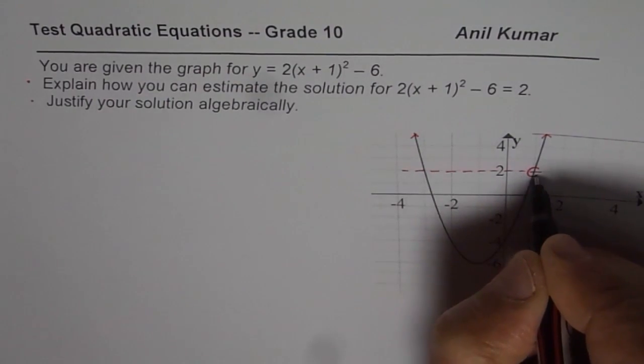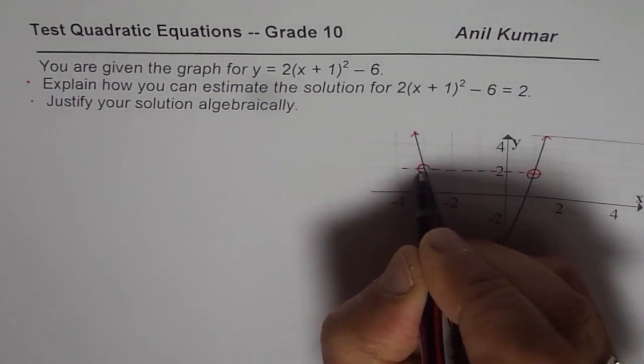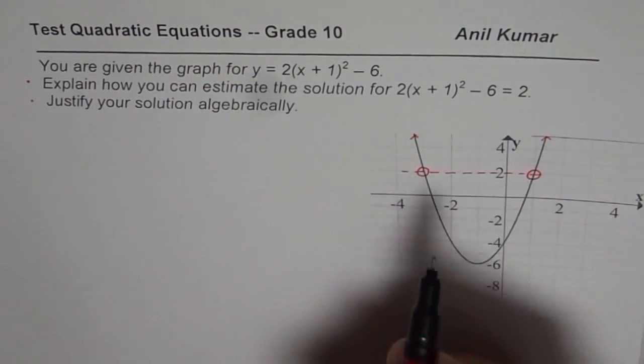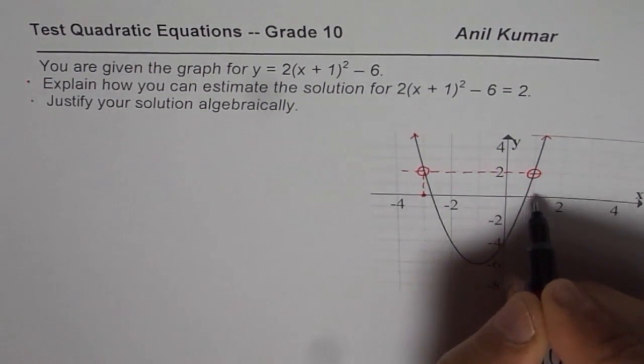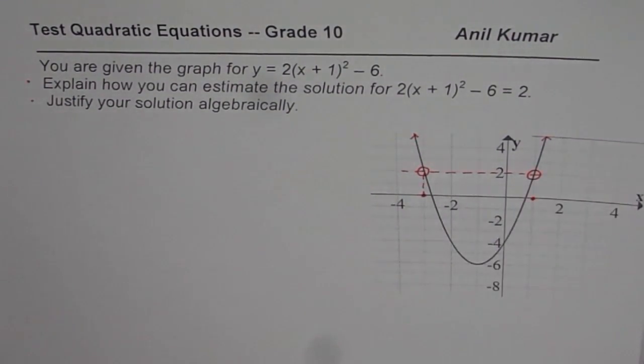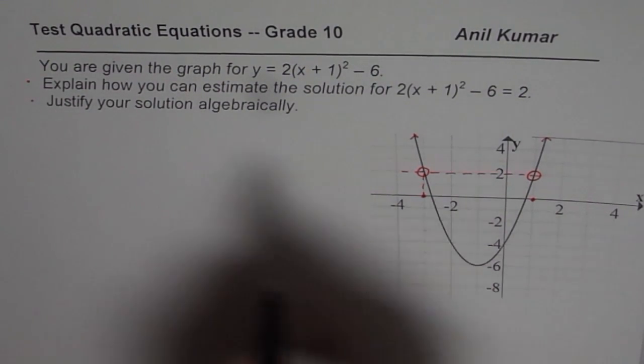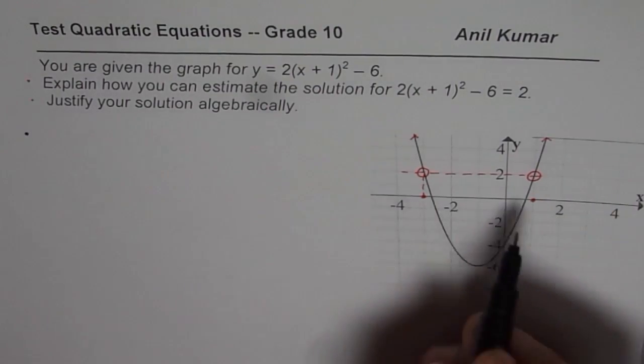You can clearly see that it crosses at two points on the parabola. So those are the two points which we are looking for. So the x values actually are the solutions. So from the graph, we can write down this solution. So the steps are clear to you.